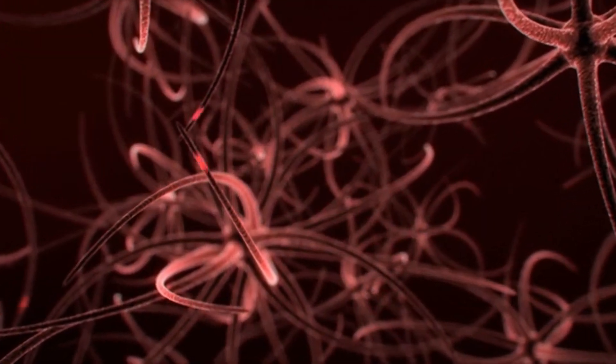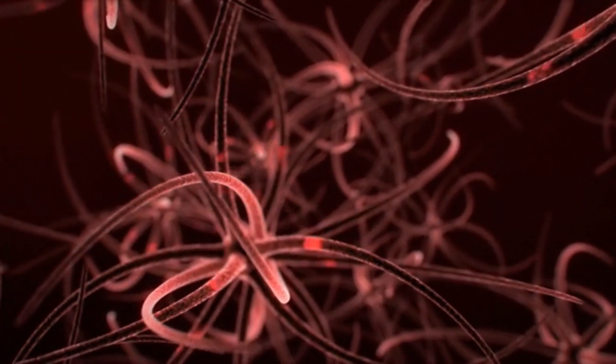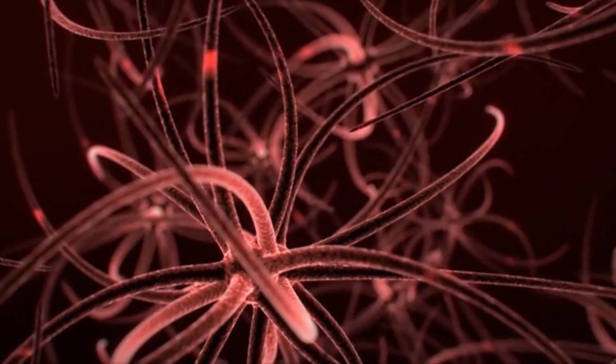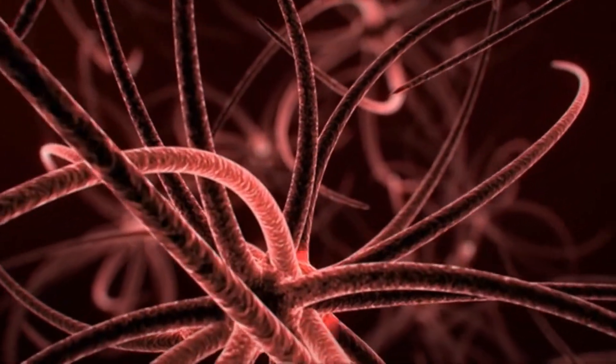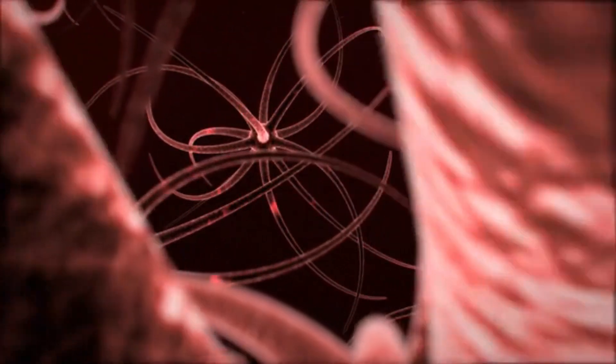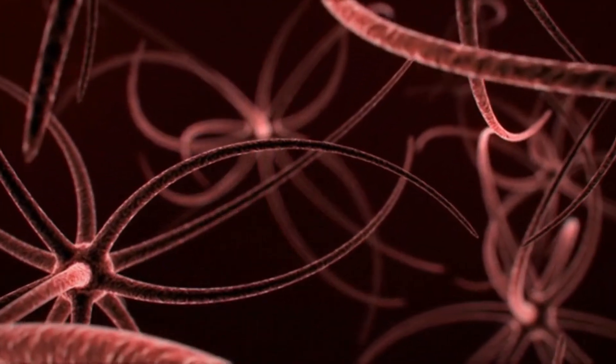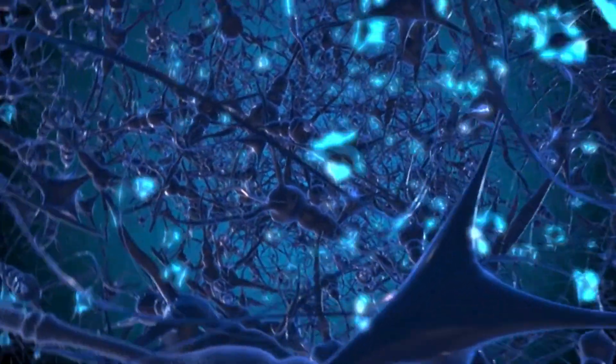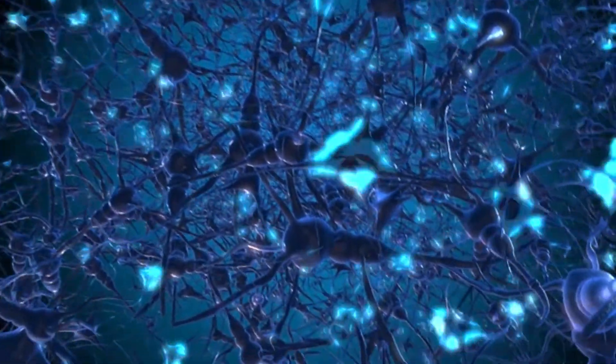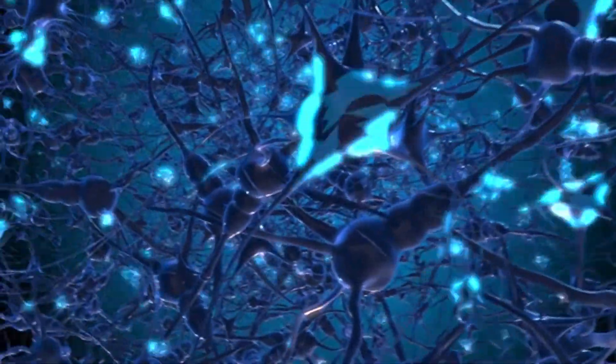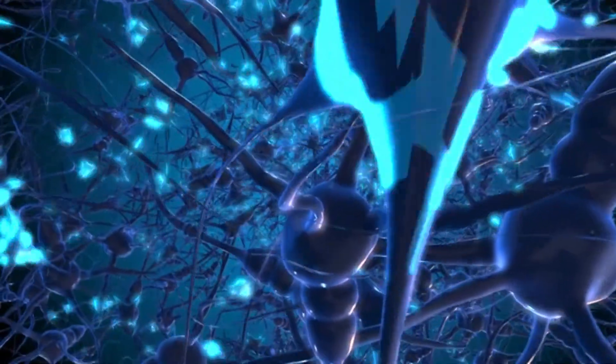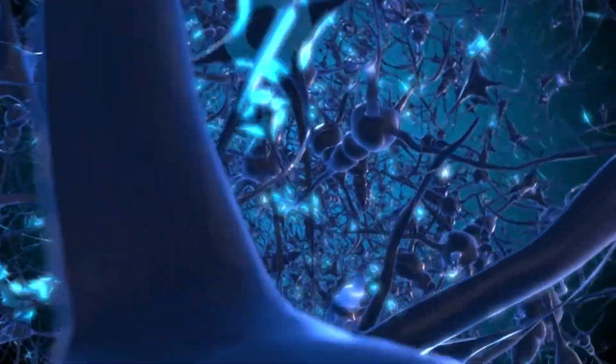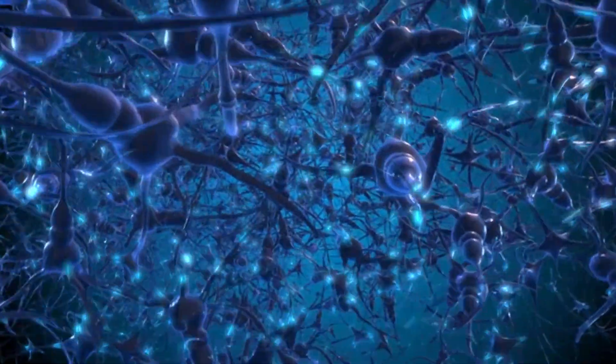Brain information travels up to an impressive 268 miles per hour. This is faster than a Formula One race car, which tops out at 240 miles per hour. When a neuron is stimulated, it generates an electrical impulse that travels from cell to cell. The signals carried by large diameter myelinated neurons that link the spinal cord to the muscles can travel at speeds of 120 meters per second, which is exactly 268 miles per hour.